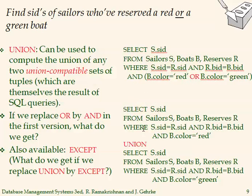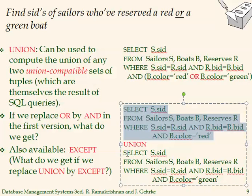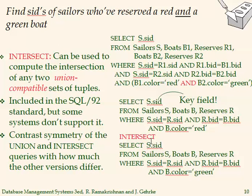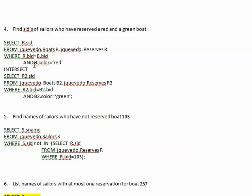One approach is to get the reservation for red, get the reservation for green, do the union — and then a good alternative is changing that UNION to INTERSECT. In my Oracle implementation, the changes I made are: I changed UNION to INTERSECT and deleted the sailors table from both subqueries since we're not getting any information from sailors.